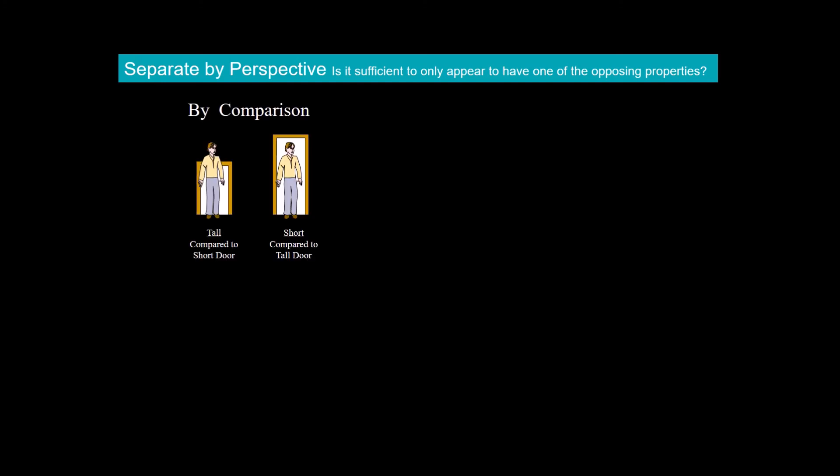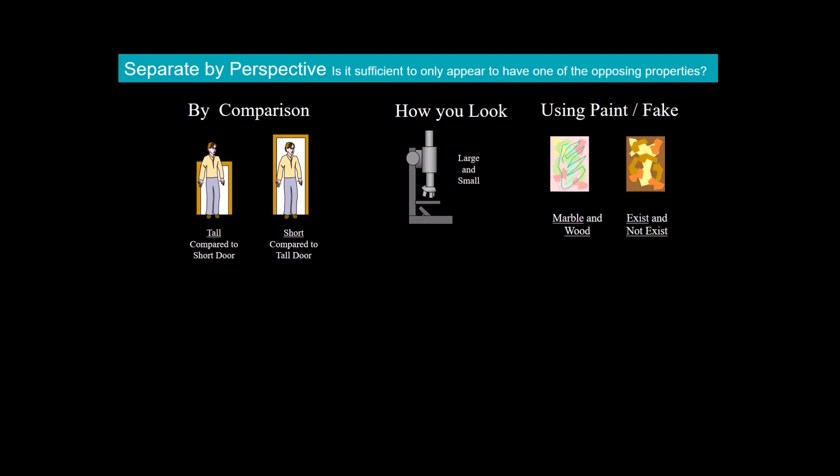By comparison, a short man can be tall compared to a short door or be short compared to a tall door. Depending on how you look at something, something that is very small can look very large. By using paint or fake materials, wood can be made to look like marble, or a person can appear to not exist if he is wearing camouflage.